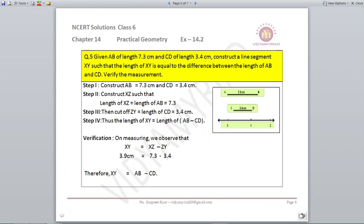Question number five: given AB of length 7.3 centimeters and CD of length 3.4 centimeters, construct a line segment XY such that the length of XY is equal to the difference between the length of AB and CD and verify the measurement. So first you just draw AB as a segment 7.3 and CD as a line 3.4.